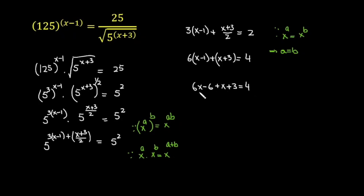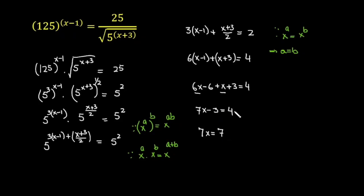Adding the like terms: 6x plus x is 7x, and minus 6 plus 3 is minus 3, so 7x minus 3 equals 4. Taking minus 3 to the other side gives 7x equals 4 plus 3, which is 7. Therefore x equals 7 over 7, so x equals 1.